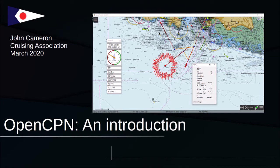OpenCPN has been downloaded tens of thousands of times since its release in 2007 and now has a reputation as a first-class plotter application. Three years ago, inexpensive licence charts for the UK and Northern Europe were made available, and we began using it for planning and live navigation. It's been great.